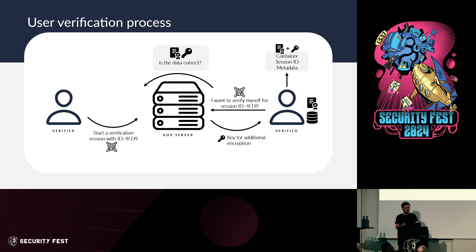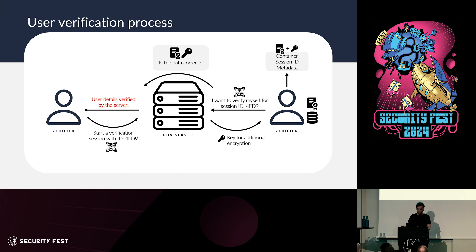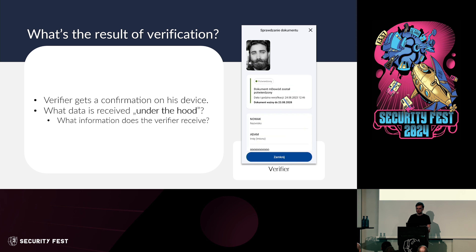The server is responsible for verifying the data — it's not peer-to-peer, the server is the intermediary where the whole verification happens. Once successful, the server returns information confirming the exchange. As a result of cryptographic verification, a confirmation screen is shown to the verifier. But we want to know what's really happening — what is the actual data returned from the server to the verifier?